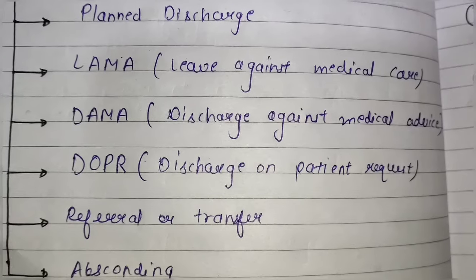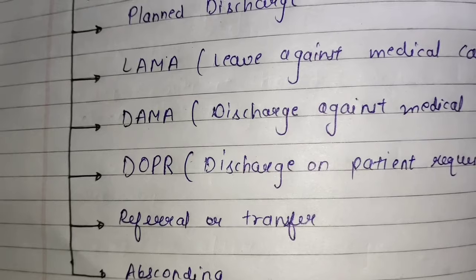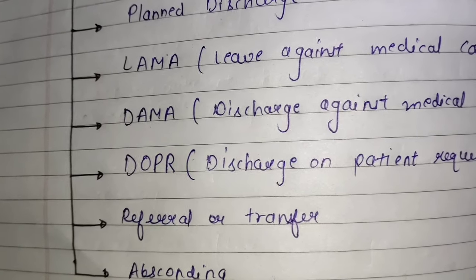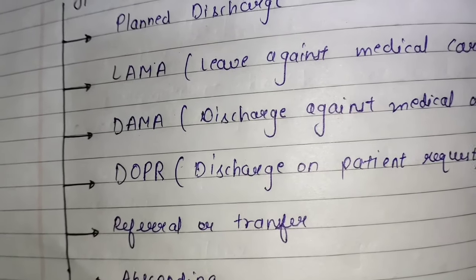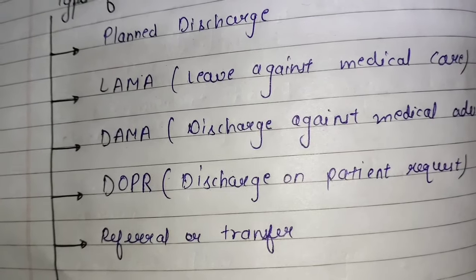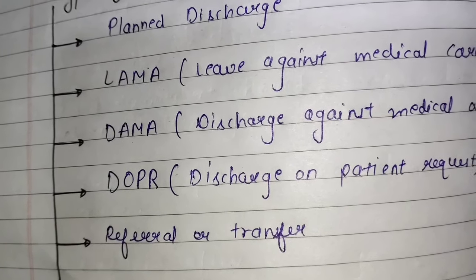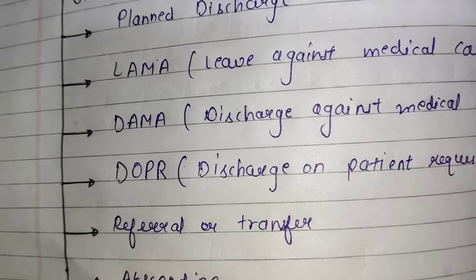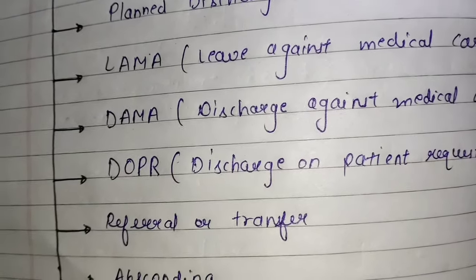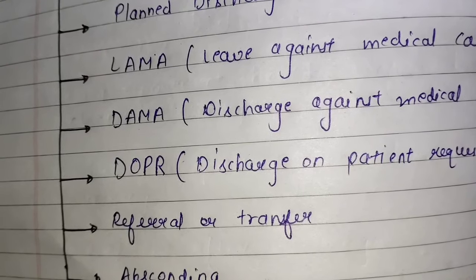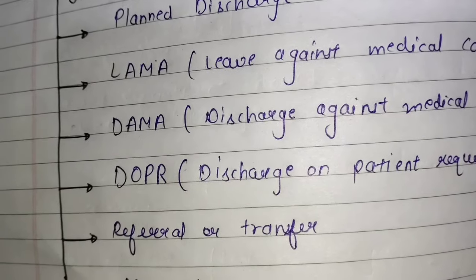Next is absconding. Absconding mein jo patient hota hai, wo hospital ko chhod deta hai without any information to hospital authorities — matlab hospital ki jo authority hai, usko information provide nahi karta ki wo hospital chhod raha hai. Treatment ke beech se hi chhod deta hai. Aur kabhi-kabhi jo patient hota hai, wo apni dues bhi pay nahi karta, poora chhod ke chala jata hai hospital ko.